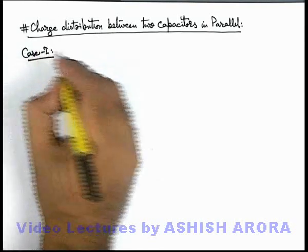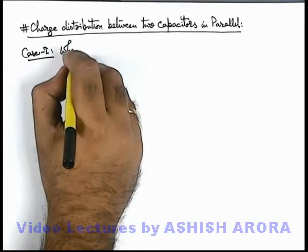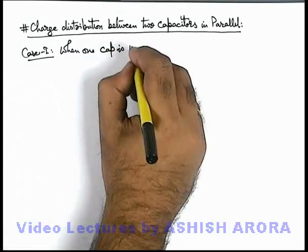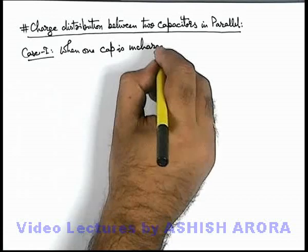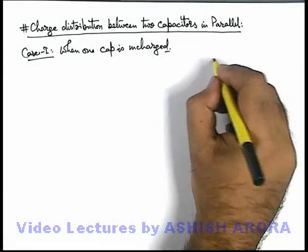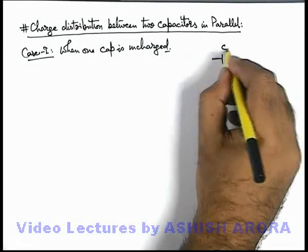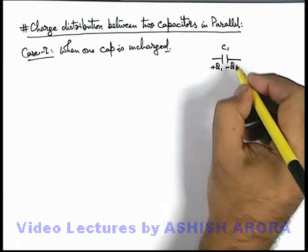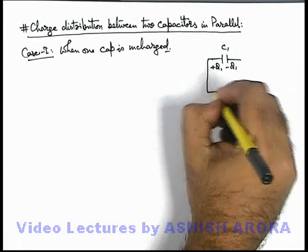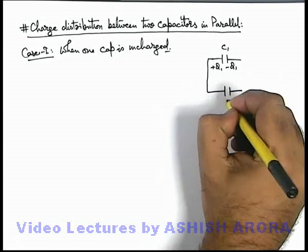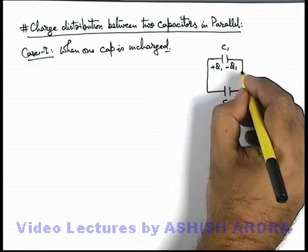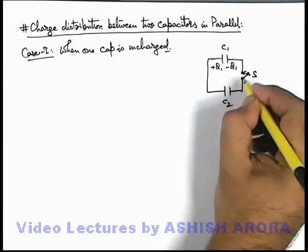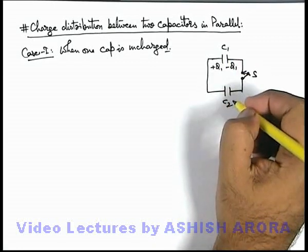Case 1 is when one capacitor is uncharged. Here, capacitor C1 is carrying a charge plus Q1 and minus Q1 on its 2 plates. It is connected to another capacitor C2 in parallel along with a switch, so when switch S is closed, C2 will be connected in parallel with C1.